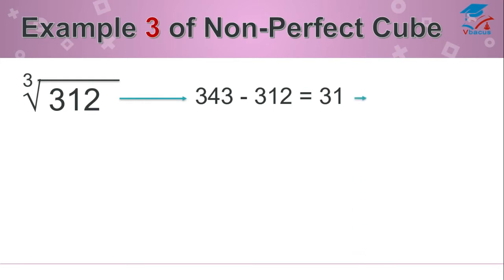Find the difference between 343 and 312, that is 31. We have taken the bigger one, so here we have to subtract. Multiply 31, the difference, by the perfect cube root of 343, that is 7. And it should be divided by 3 times 343, that is perfect cube number of 7.